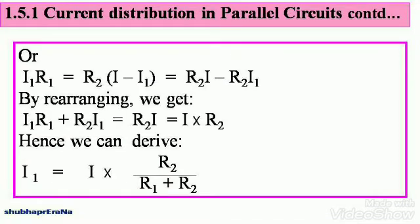Or, when we cross multiply, we get I1 into R1 is equal to R2 into I minus I1. And when you multiply properly, you get R2 into I minus R2 into I1 on the right hand side.